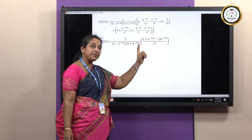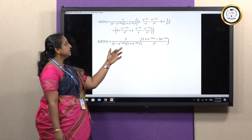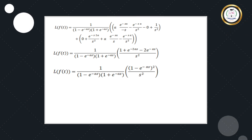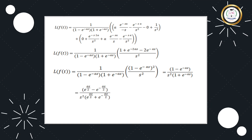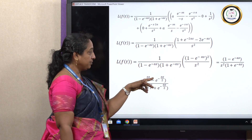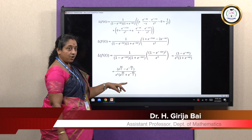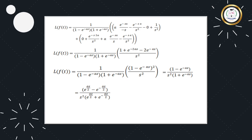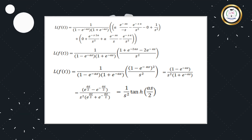The numerator 1 − 2e^(−as) + e^(−2as) = (1 − e^(−as))², and the denominator factors as (1 − e^(−2as)) = (1 − e^(−as))(1 + e^(−as)). Cancelling (1 − e^(−as)) leaves (1 − e^(−as)) / [s²(1 + e^(−as))]. Taking out e^(−as/2) gives [e^(as/2) − e^(−as/2)] / [e^(as/2) + e^(−as/2)], which equals tanh(as/2). Therefore, the Laplace Transform of the sawtooth wave is (1/s²)·tanh(as/2).